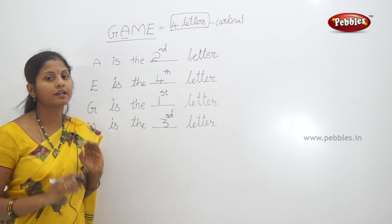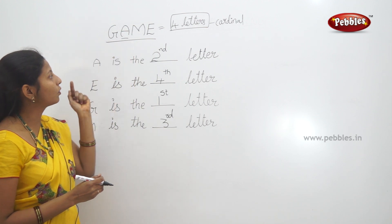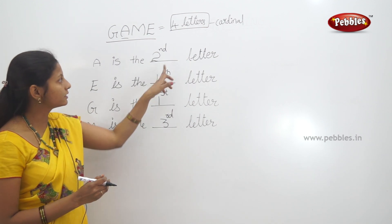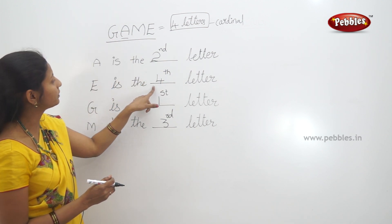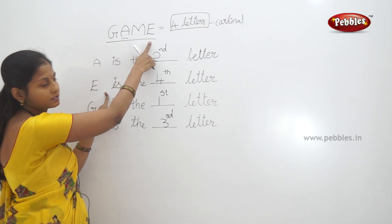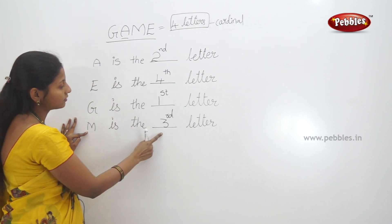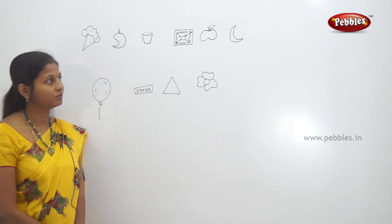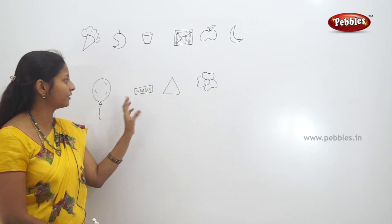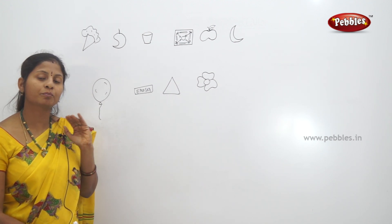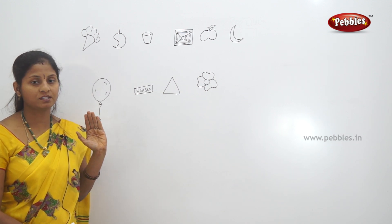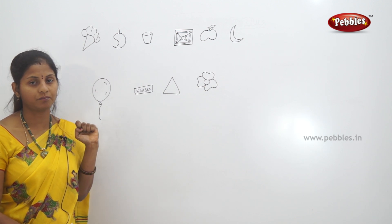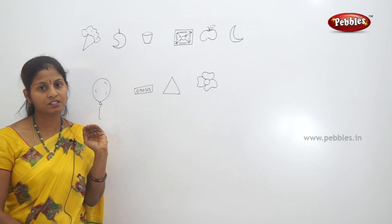In a game with any number of letters, the total quantity uses cardinal numbers for counting. In a word, each letter's position — which position it is in — uses ordinal numbers. That tells which position a letter is in. For example, I is in the second place — first, second. G is in the fourth place — first, second, third, fourth. M is the third letter — in the third position.